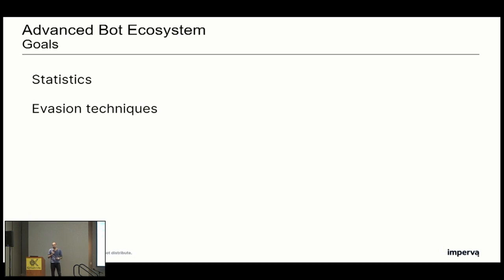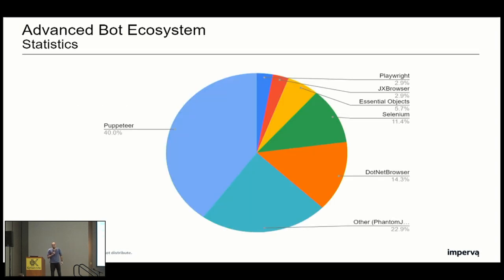Using all of those techniques, I was able to generate a repository of around 40 advanced bots. From that, we wanted to know the static characteristics — what type of bots, what technologies are behind them, and whether we can track efficient techniques to detect them. 45% of them were using the Electron framework. The headless browser technology was mostly dominated by Puppeteer — around 40% were using Puppeteer — but we could see many other types of headless browsers such as Playwright, Selenium, Essential Objects, and .NET browser.